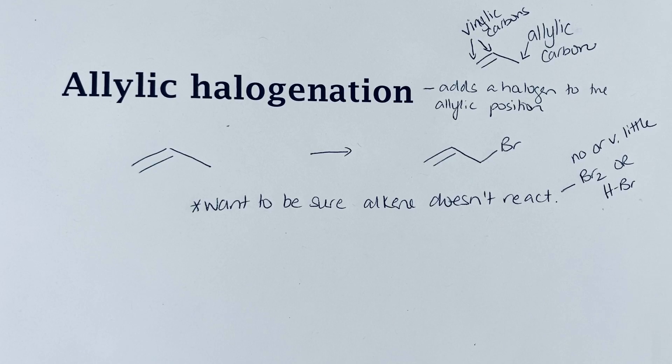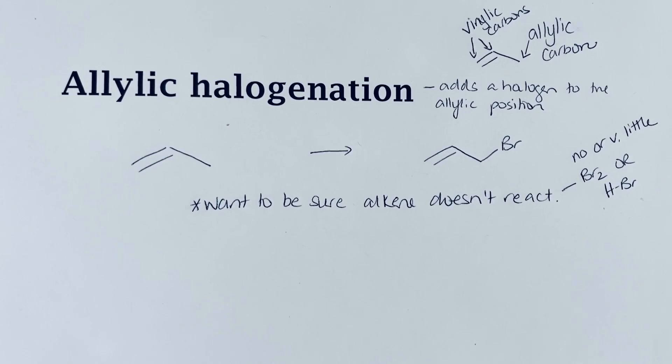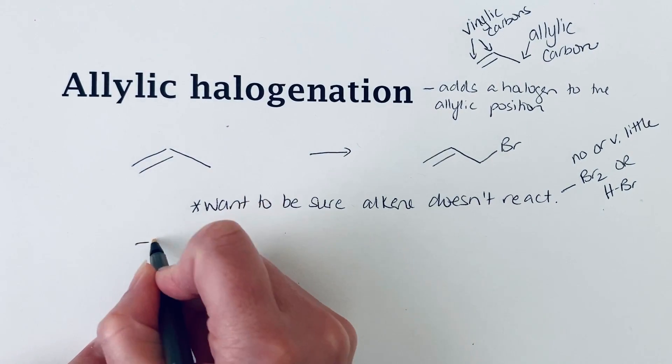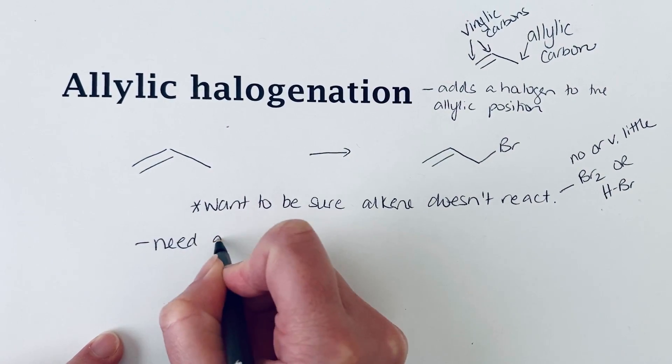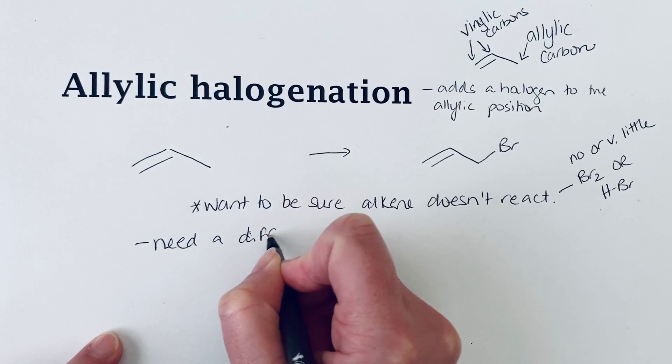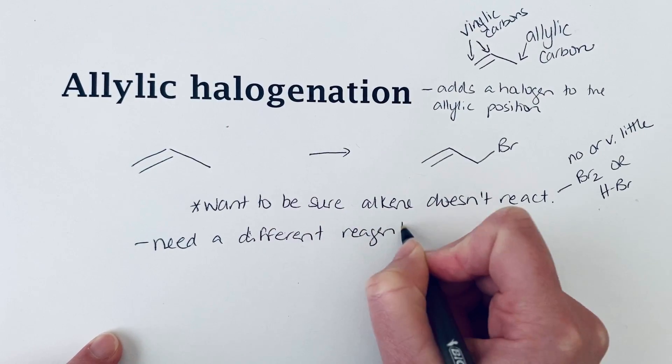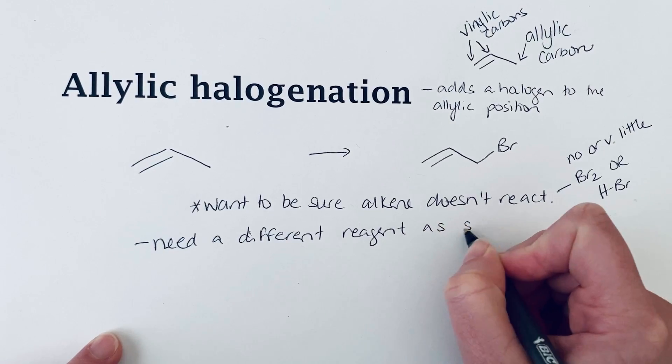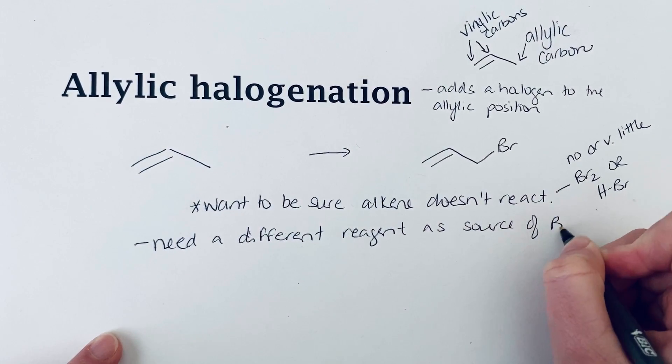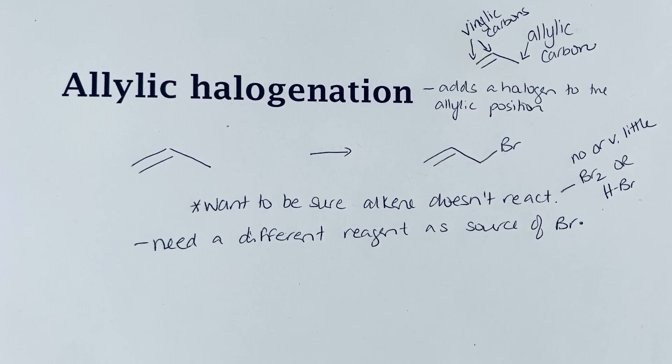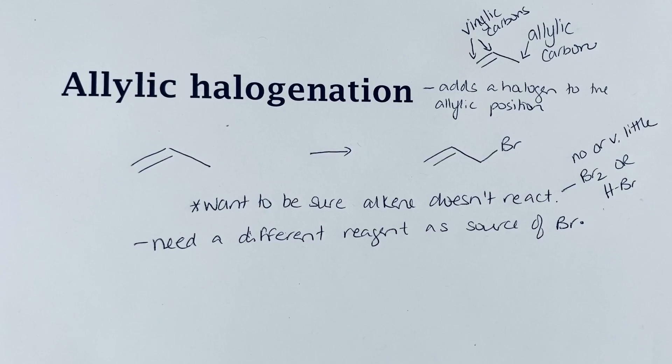To do this reaction, we use a different reagent as the source of the bromine radical. We need a different reagent to provide that bromine radical. The reagent that we use for this is known as NBS.